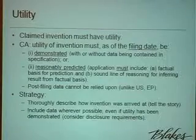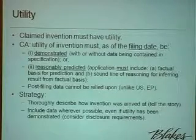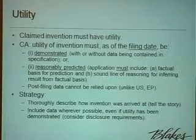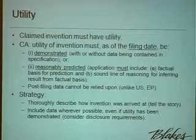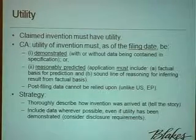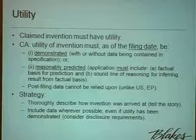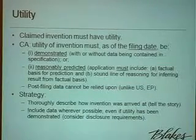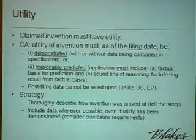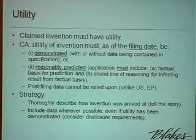Under our law, under the Supreme Court decision from a few years back, in order to substantiate a reasonable prediction, there has to be a factual basis for making the prediction, and then a sound line of reasoning extending the factual basis to the predicted utility of the entire scope of the claim. Part three of that test is that both of those factors must be contained in the specification. Post-filing data is not allowed. So the takeaway here — my recommended strategy is to tell the story. Explain in very simple terms from start to finish how the invention was arrived at, and in most cases you'll be taking care of your reasonable prediction requirement under our law.